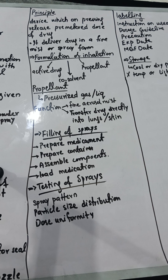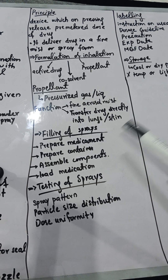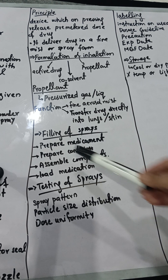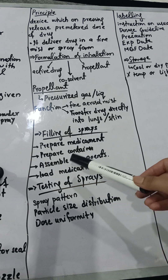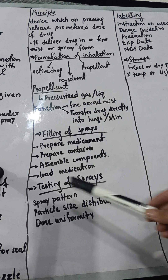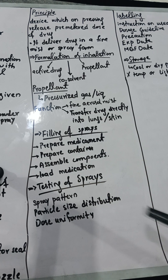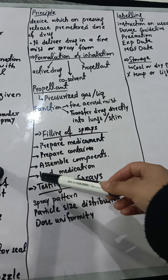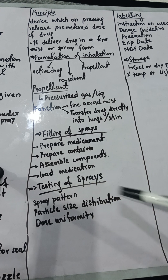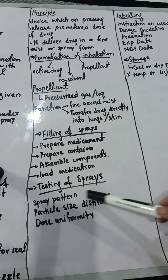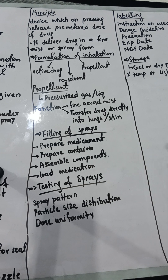It is involved in the filling of sprays. The methods are: first we prepare our medicament, then we prepare our containers, then we assemble all the components of the container. Then we will pressurize and fill our medication. For testing, we test the spray pattern and particle size in the spray, and we also ensure that the dose is released with uniformity.